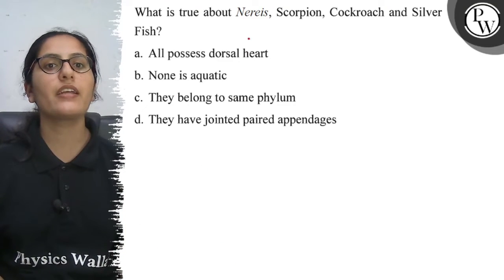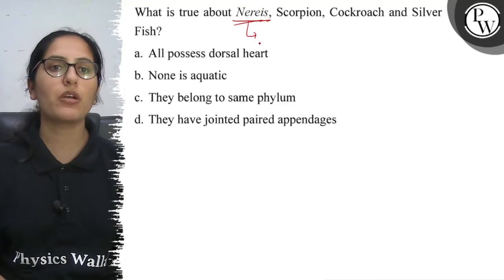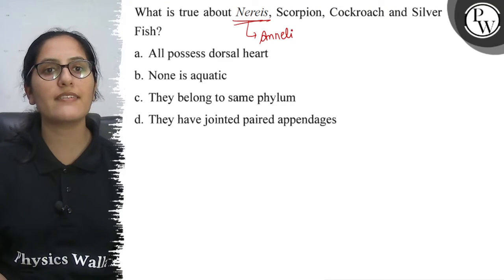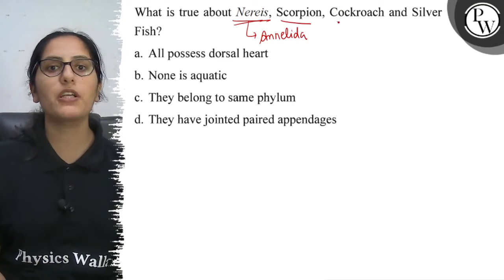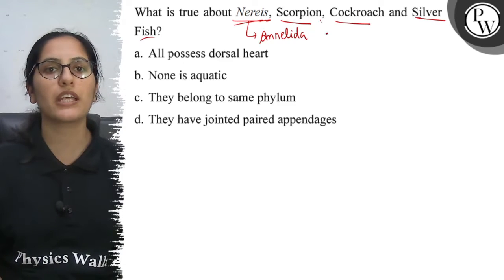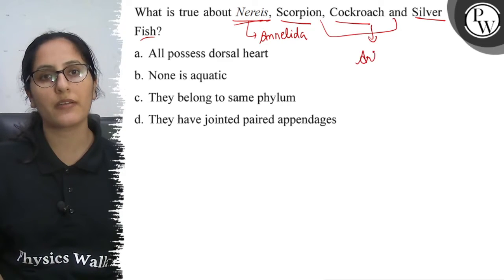Look, in the question we have given Nereis, which belongs to the phylum Annelida. Okay. Scorpion, Cockroach and Silverfish belong to the phylum Arthropoda.